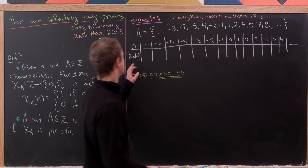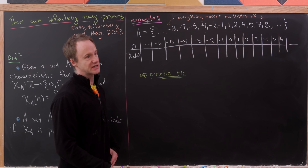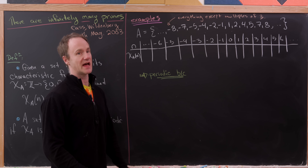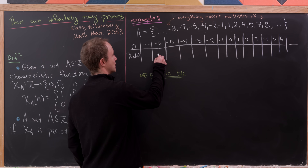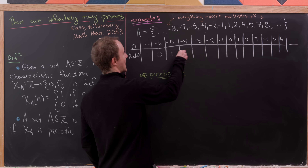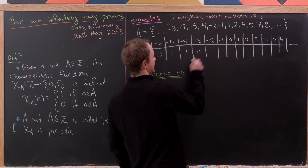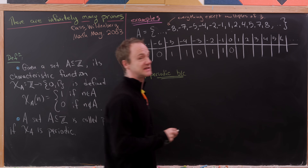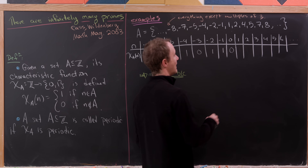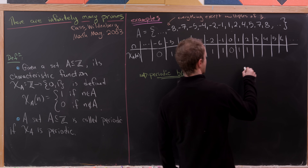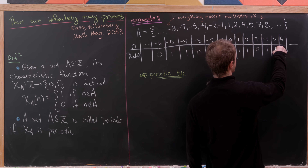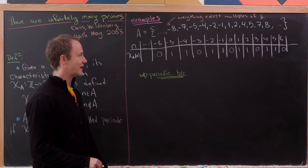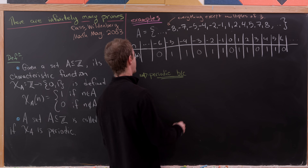Let's look at what the characteristic function of this set does to the integers. Negative 6 is not an element, so we get 0. Negative 5 and negative 4 are elements, so we get 1. Negative 3 is not. Negative 2 and negative 1 are. For 0, we get 0 because 0 is a multiple of 3. For 1 and 2 we get 1. For 3 we get 0. 4 and 5 get 1. 6 gets 0.